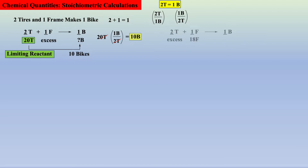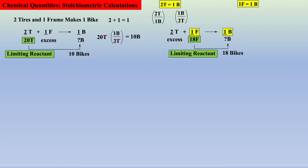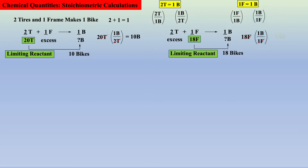If I have infinite tires and 18 frames, how many bikes can I produce? This time the frames will limit the production of bikes to 18, which can be envisioned as follows. The equality one frame equals one bike affords two conversion factors. Starting with 18 frames and converting to bikes by multiplying with the correct conversion factor — one bike over one frame — frames cancel, which affords the answer 18 with the desired unit: bikes.